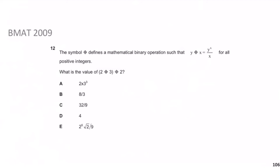Now we move to BMAT 2009 Question 12. A binary operation, the 'diamond', is defined as: y ◇ x = y^x / x, for all positive integers. What is the value of (2 ◇ 3) ◇ 2? This tests the concept of BIDMAS — deal with the bracket first. 2 ◇ 3 = 2³ / 3 = 8/3.